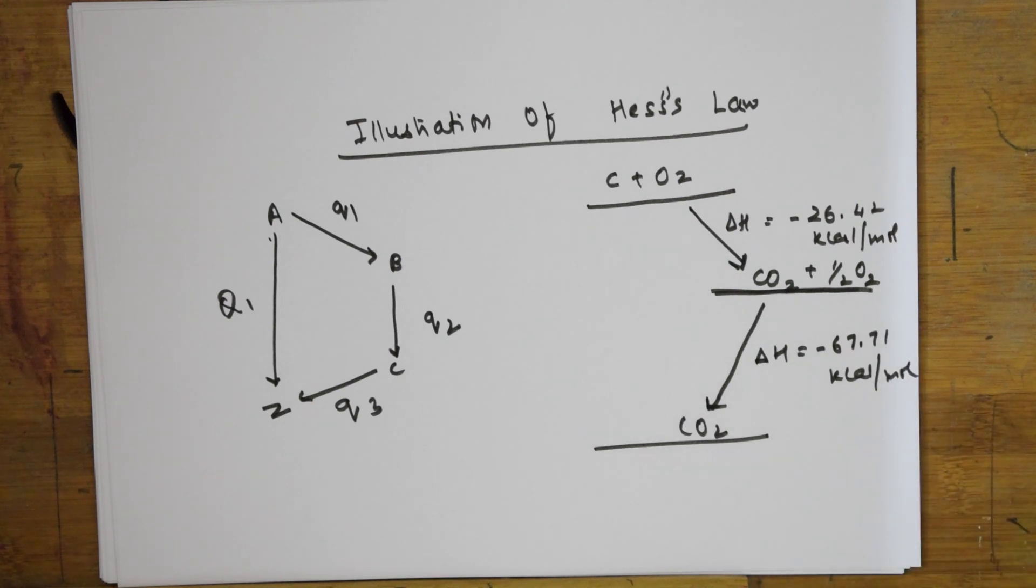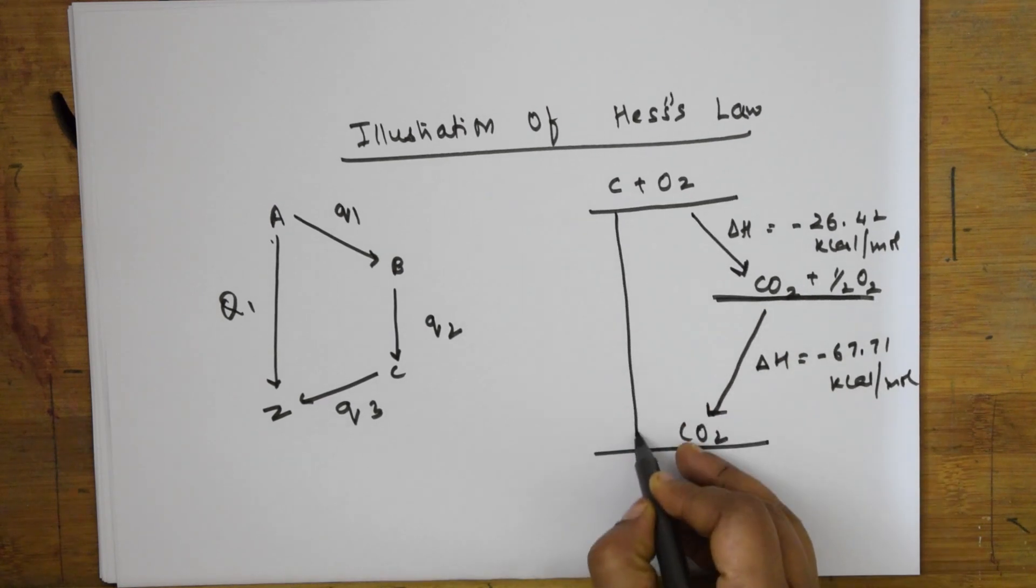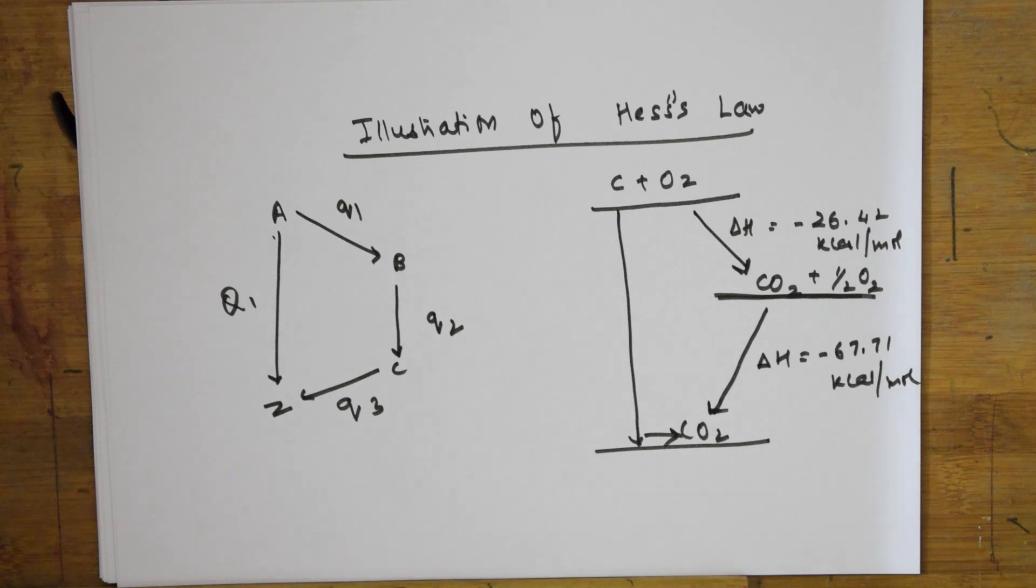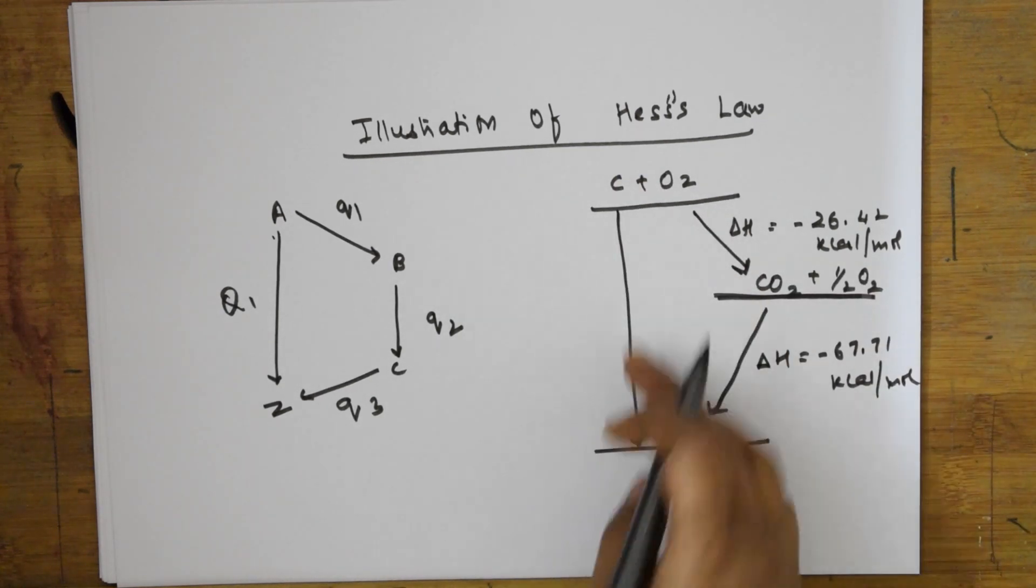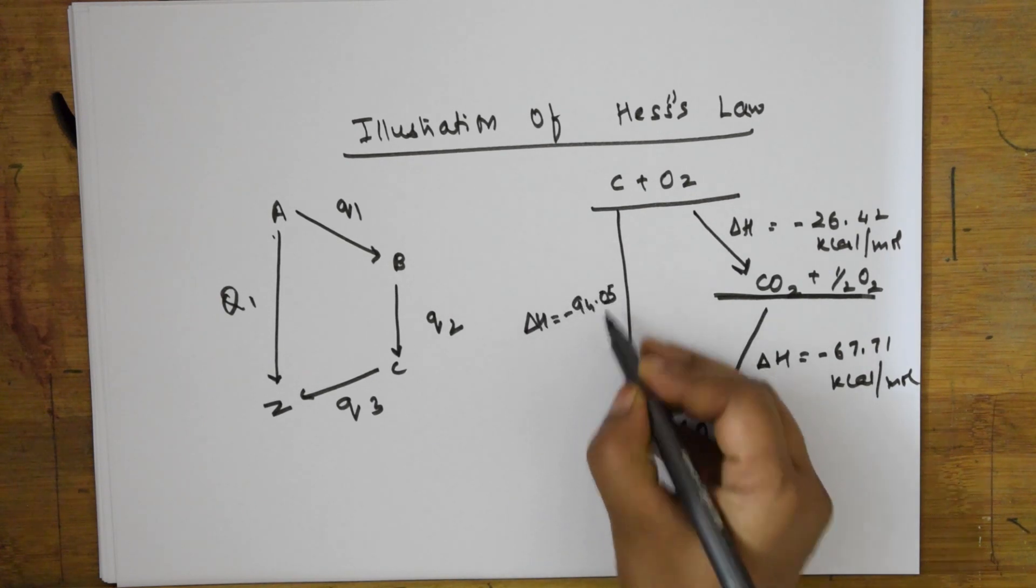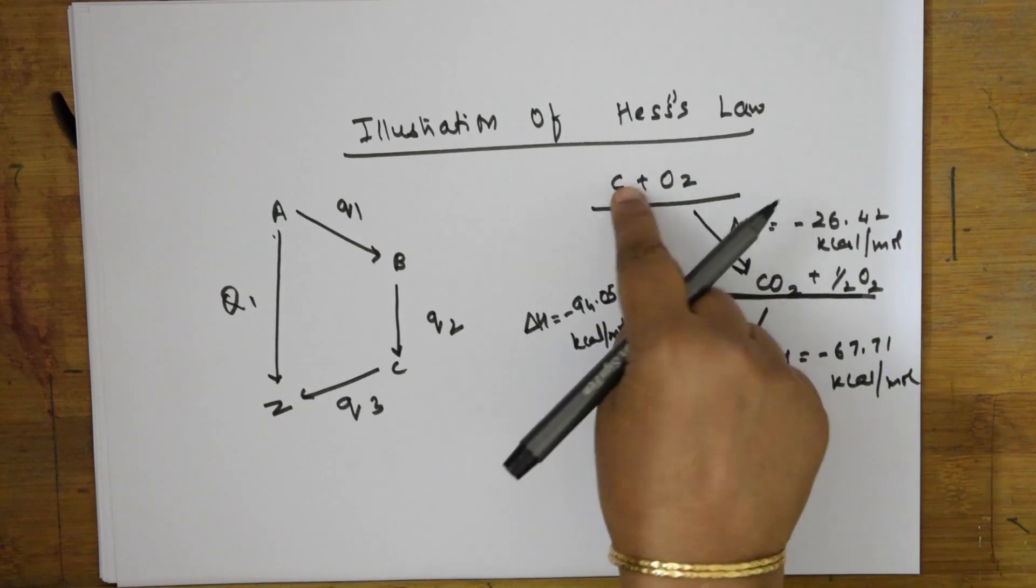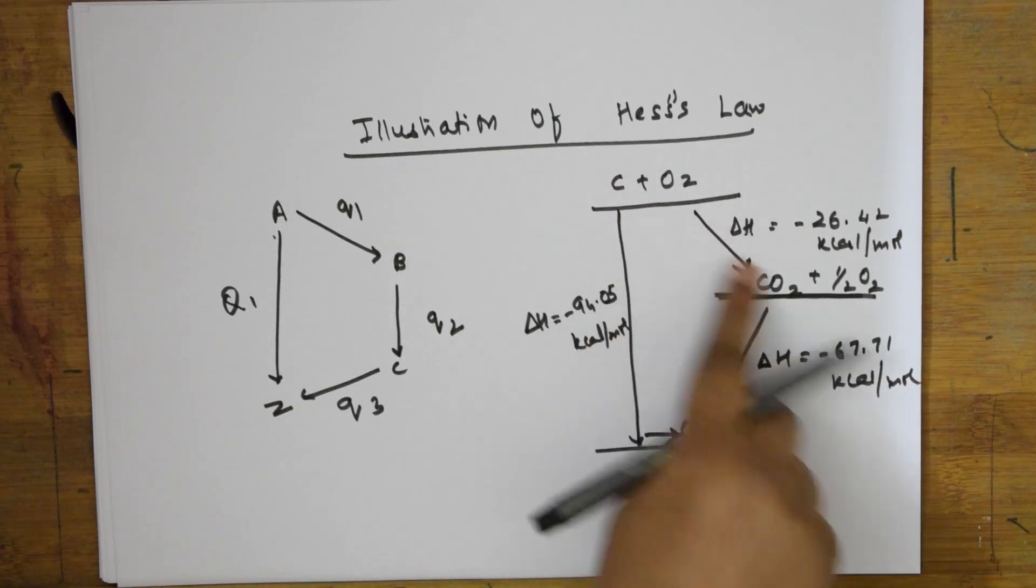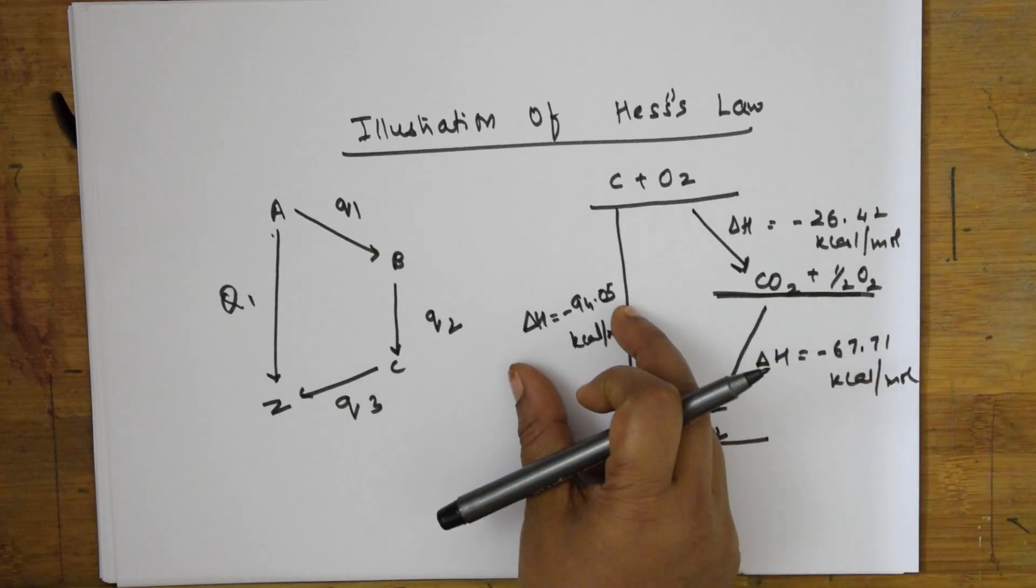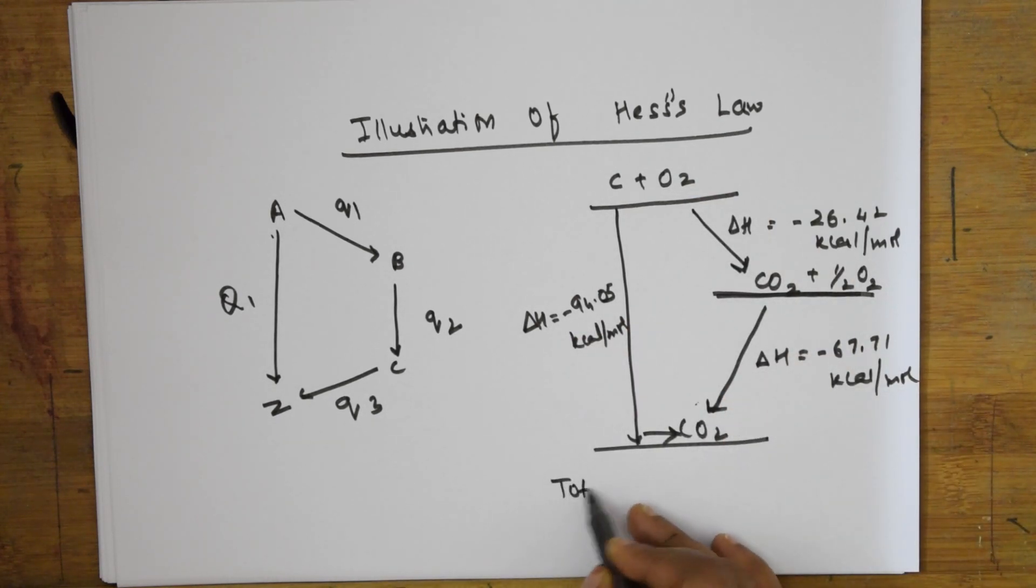If I take the direct conversion, delta H value is minus 94.05 kilocalories per mole. We said Q1 should equal Q2. This direct value is Q1. The stepwise is Q2. Let us see. If I take the total heat for the stepwise process, delta H equals minus 26.42 plus minus 67.71.